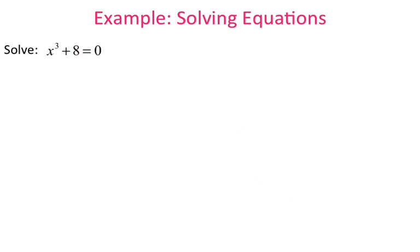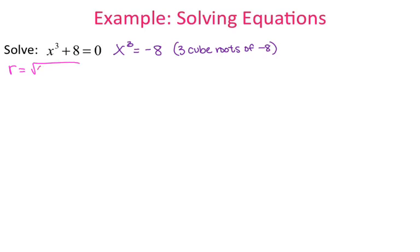Last one — solving equations. I want to find x such that x cubed plus 8 equals 0. I rewrite it as x cubed equals negative 8, so I'm finding the three cube roots of negative 8. Negative 8 is the same as negative 8 plus 0i. So r equals the square root of negative 8 squared plus 0 squared, which is the square root of 64, which is 8.